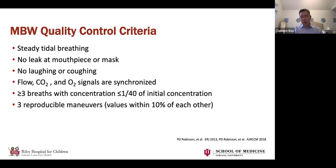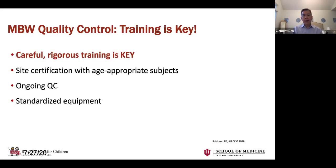Rigorous training is key for quality control. For cystic fibrosis, the multiple breath washout center in Toronto serves as the CF Therapeutics Development Network core lab for MBW. They certify operators — not sites, but operators — to perform research-quality MBW in both pediatric and preschool-aged children. These are two separate certifications: preschool age is three to five years old, and pediatric is six to 18.